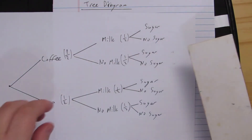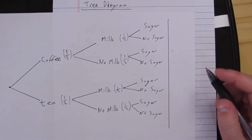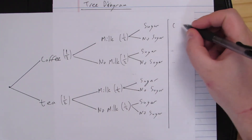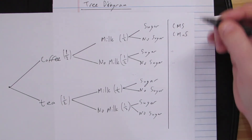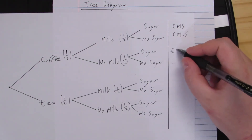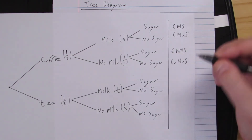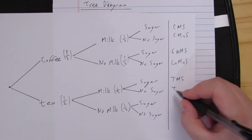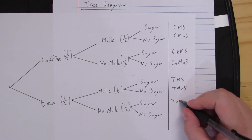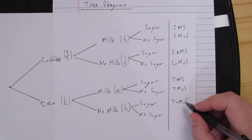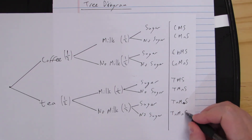It's always a good idea to list the set of outcomes for this sort of thing, as it makes it easier to see everything. So I'm going to summarize: coffee, milk, sugar; coffee, milk, no sugar — and we repeat the process for all the other combinations.